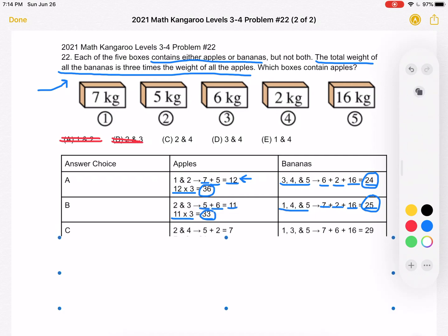Let's check C. For C, we have that boxes 2 and 4 contain apples. That would be 5 plus 2 for a total of 7 apples. And the remaining boxes 1, 3, and 5 would contain bananas. That's 7 plus 6 plus 16, which is a total of 29. If we multiply the number of apples by 3, we get 21. 21 is not equal to 29, so answer choice C must be incorrect.